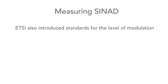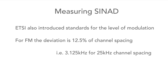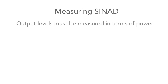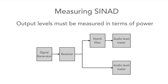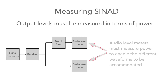The modulation level is also important. ETSI specifies that for FM, a deviation level equal to 12.5% of the channel spacing should be used, ensuring commonality across radios from different manufacturers. The output from the radio must be measured in terms of power because different waveforms, including noise, will have different shapes, and using power levels removes the variability between different waveform types.